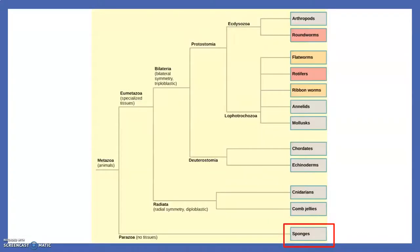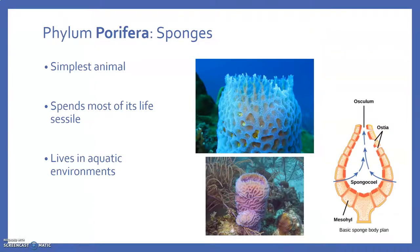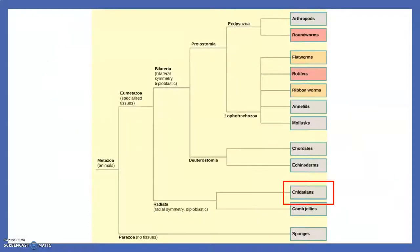We're going to start with probably the animal you definitely did not think of, which is a phylum known as Porifera, or the sponges. Sponges may not seem like an animal, but they're actually the simplest animal. They don't have body symmetry, so they are asymmetric, and they spend most of their life sessile, or not moving. But they do move at the beginning of their lives, which satisfies the animal characteristic of being motile. They are heterotrophic and most sponges live in aquatic environments.